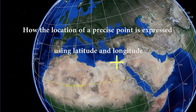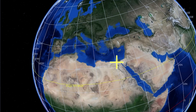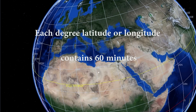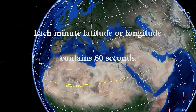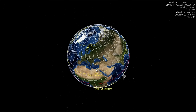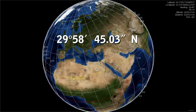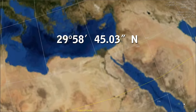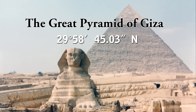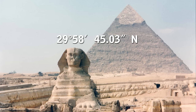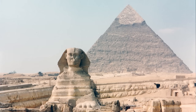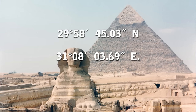To locate a precise point on the Earth's surface, degrees of latitude and longitude have been divided into minutes and seconds. There are sixty minutes in each degree, and each minute is divided into sixty seconds. For example, the coordinates for the Great Pyramid of Giza is written as 29 degrees, 58 minutes, 45.03 seconds north, 31 degrees, 8 minutes, and 03.69 seconds east.